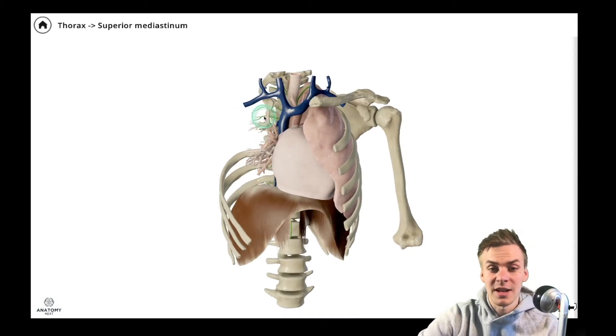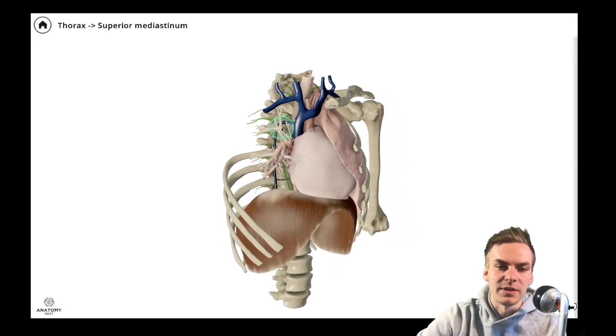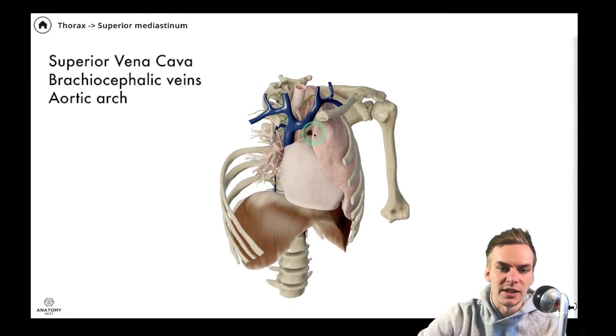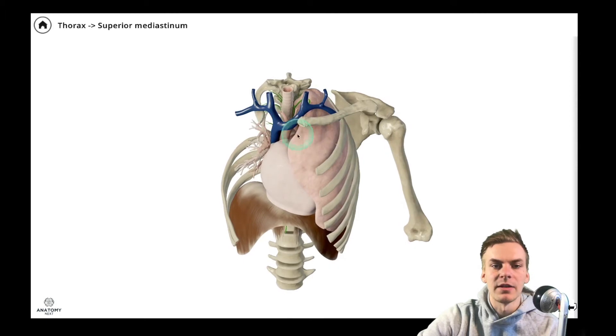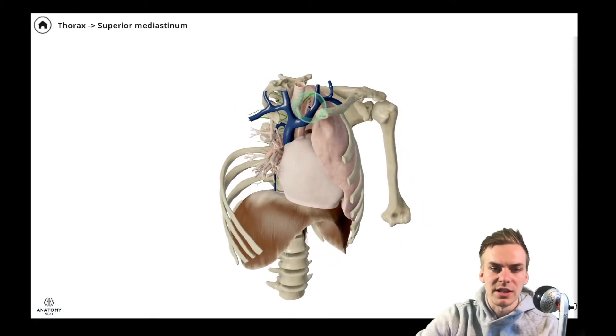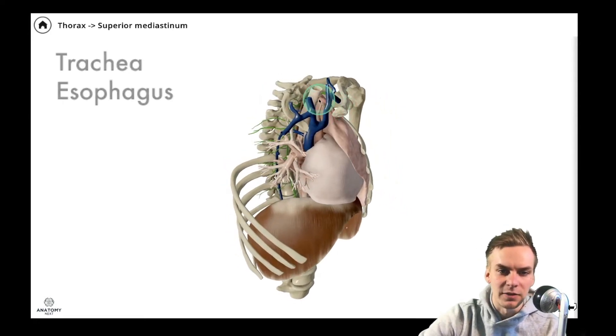There are some very important structures in the superior mediastinum that you can see here. For example, the superior vena cava, both of the brachiocephalic veins. We can also see the arch of the aorta coming out of the left ventricle. We can also see the trachea and right behind the trachea we see the esophagus here.